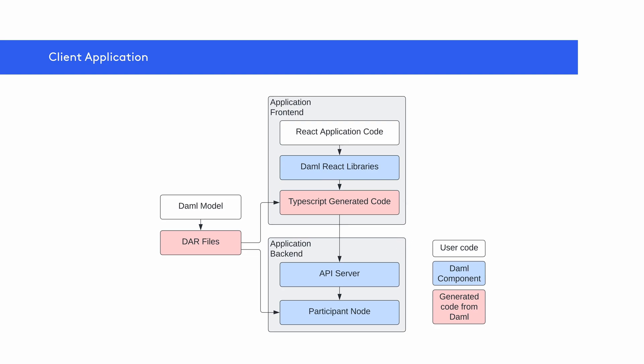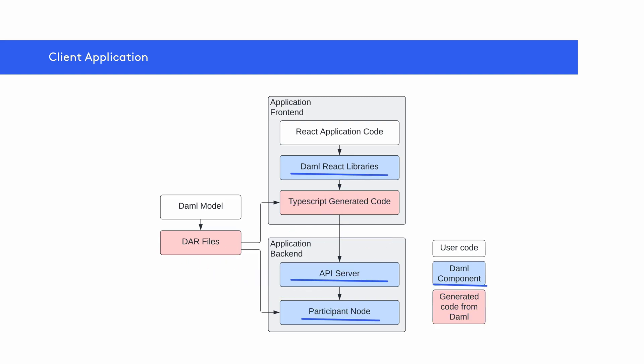As shown here, we find three types of building blocks spread across the application front-end and back-end. The user code is what application developers write to build DAML applications — this includes the DAML templates and the React application code. Then there is generated code from DAML, which includes the DAR files and TypeScript-generated code. And then there are DAML components available as part of the DAML ecosystem: the libraries, the API server, and the participant nodes.